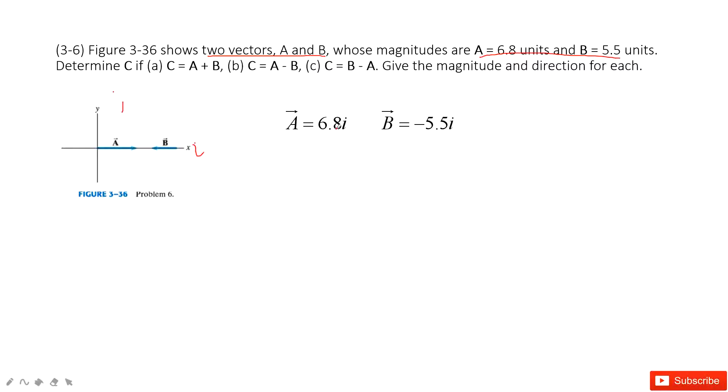So we can write these two vectors A and B. We must pay attention to this negative sign, which tells us the direction for vector B.